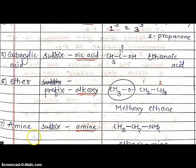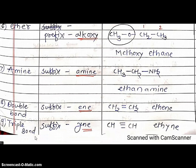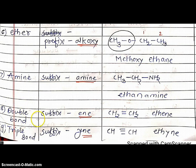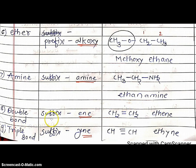Next, amines: add suffix -amine. Example: CH3CH2NH2 — 2 carbons, ethane plus NH2, known as ethanamine. Next, double bond functional group: add suffix -ene; alkane ending -ane is replaced by -ene. Example: CH2=CH2 — 2 carbons, known as ethene. And last, triple bond: add suffix -yne. Example: CH≡CH — 2 carbons, called ethyne.